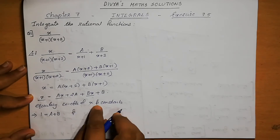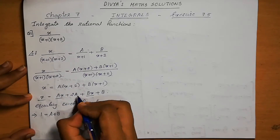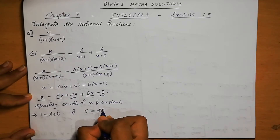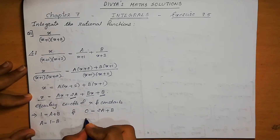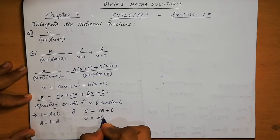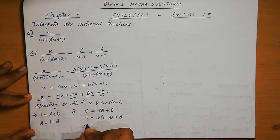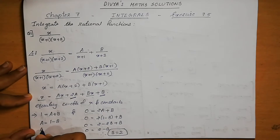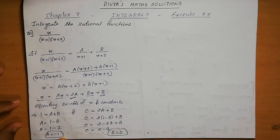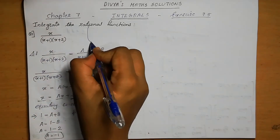Equating coefficients of x: 1 equals A plus B. Equating constants: 0 equals 2A plus B. From the first equation, A equals 1 minus B. Substituting: 0 equals 2(1 minus B) plus B, so 0 equals 2 minus B, therefore B equals 2. Then A equals 1 minus 2, so A equals minus 1.